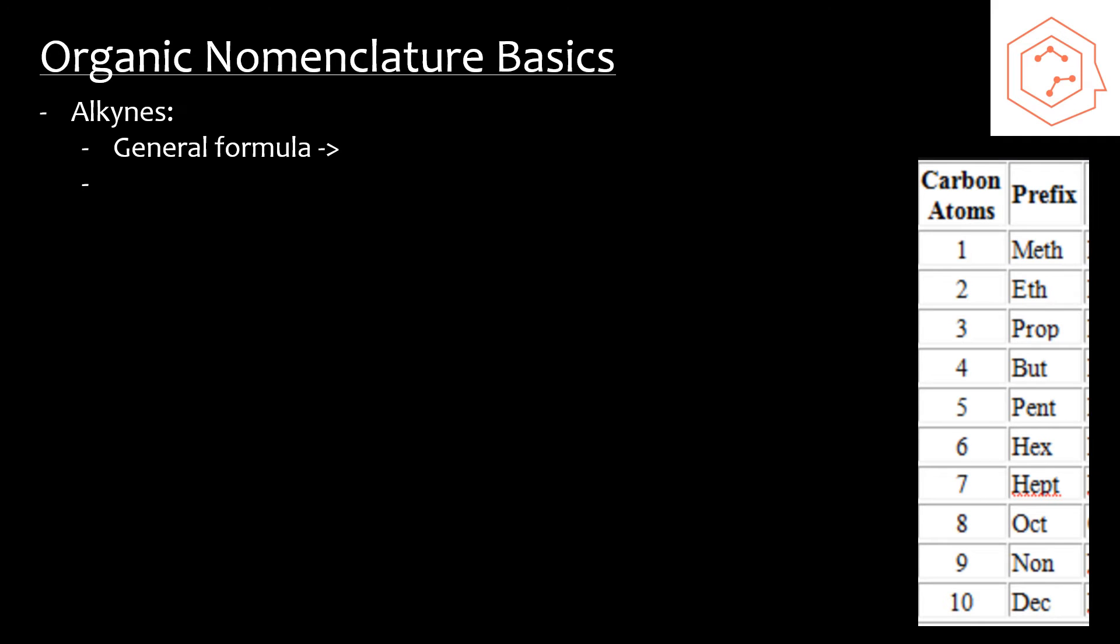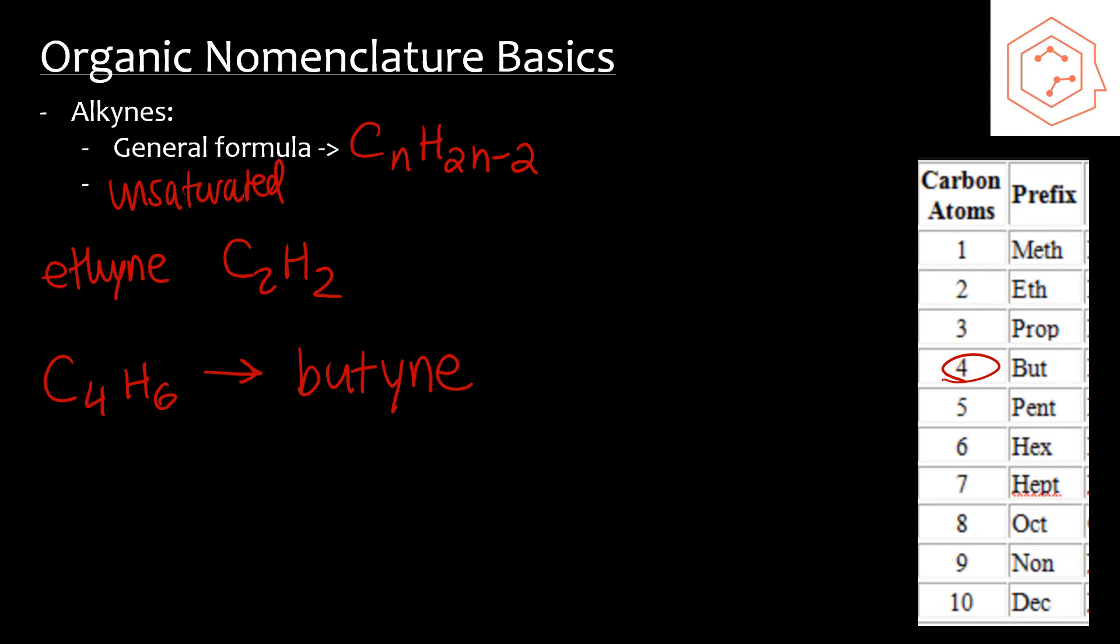Let's talk about alkynes. Alkynes are hydrocarbons that contain one triple bond. These are unsaturated. For example, let's look at ethyne. Ethyne has a general formula of C2H2. That means we can deduce that the general formula is CnH2n-2. Now let's look at C4H6 for example. If we look over here, we have four, and we have butyne.